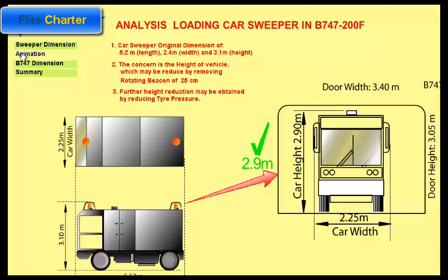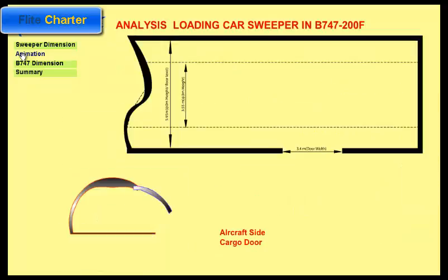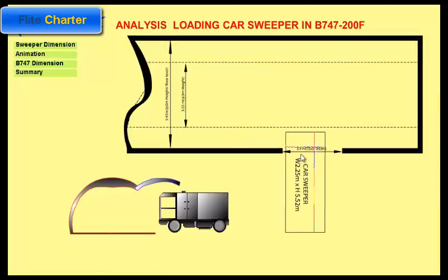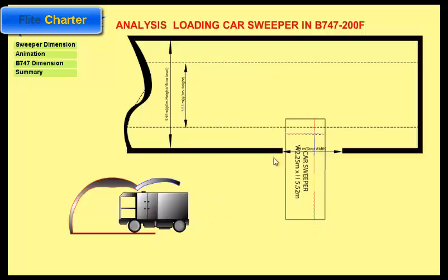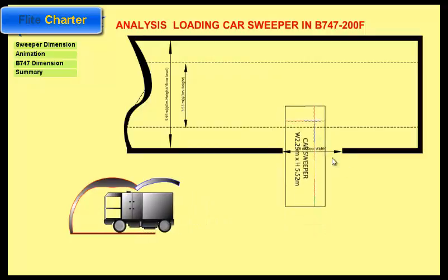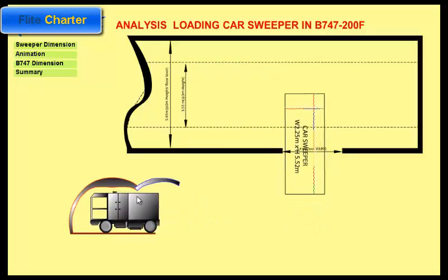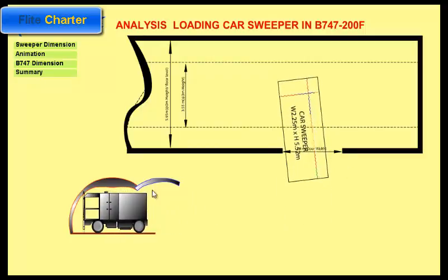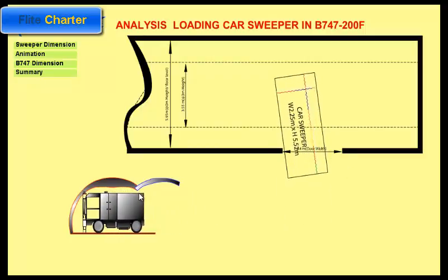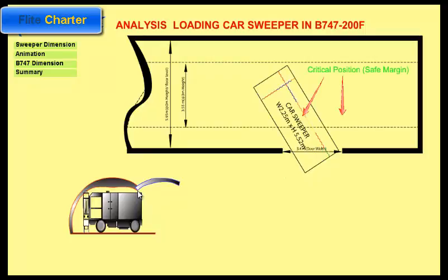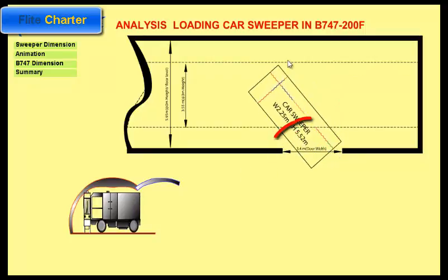Let's have a look at the animation. The door will be used as a side door with 3.5 meter width, so there's no concern with the width. The top is a concern at 3.05 meters. So these are the critical areas.